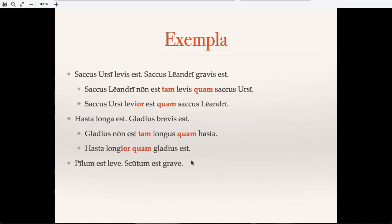Pilum est leve, scutum est grave. Pilum non tam grave est quam scutum. And then again using a comparative here. And this time because scutum is neuter, we'll have scutum gravius est quam pilum. So again, it's only with the neuter that we see this -ius form. And in the other ones, we use -ior. Quam to say 'than.' And notice also that after that quam, the thing that it's heavier than, because this is nominative, the thing that it's heavier than is also going to come in nominative. So saccus levior quam saccus, hasta longior quam gladius, scutum gravius quam pilum.